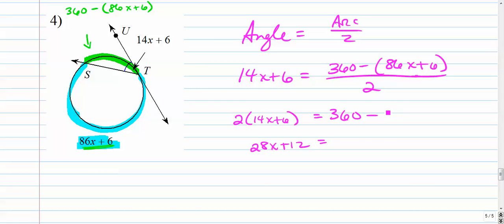The numerator does not change. So we get, we have to do a little bit of a distributive property. 360 minus 86x minus 6. A couple steps here. Let's combine like terms. On the right. We'll combine those constants. 354 minus 86x.